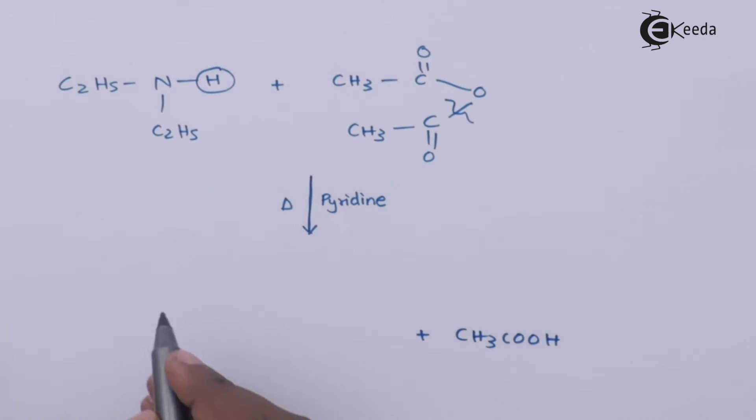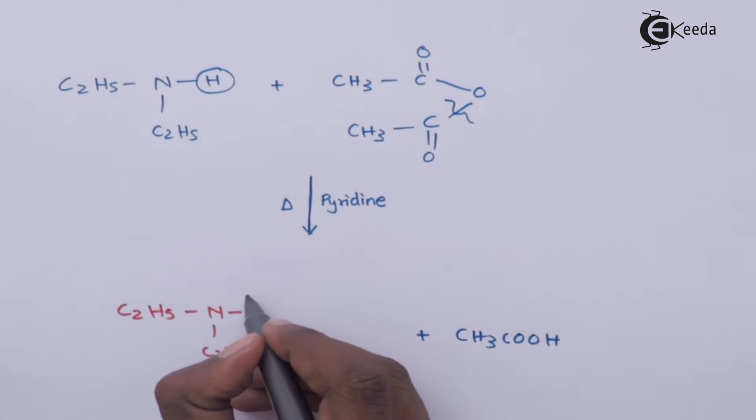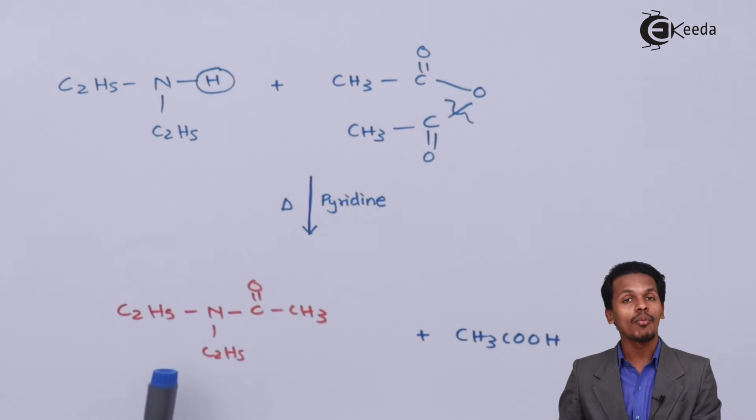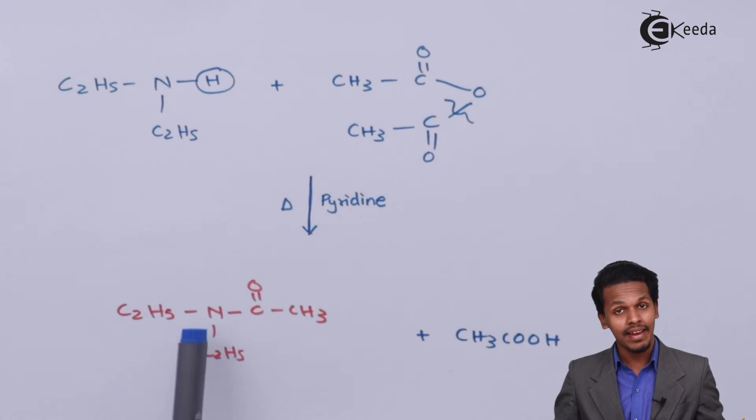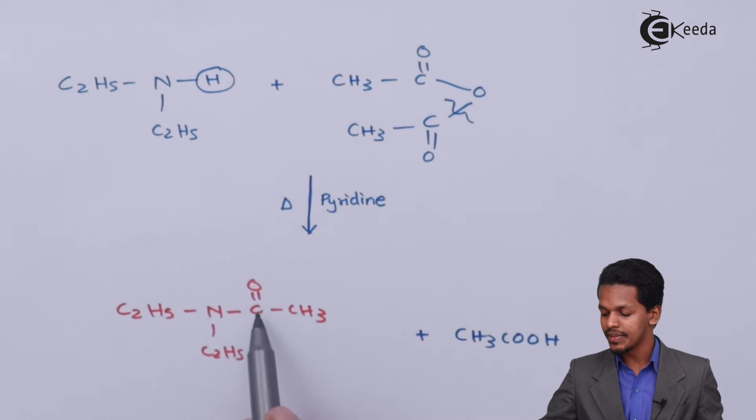And the remaining product, the main product that we have left is C2H5N, C2H5, C double bond O, and this is CH3COOH. The name of this product obtained during this reaction is N-N-Diethyl-ethanamide. This is an amide which consists of two carbon atoms.